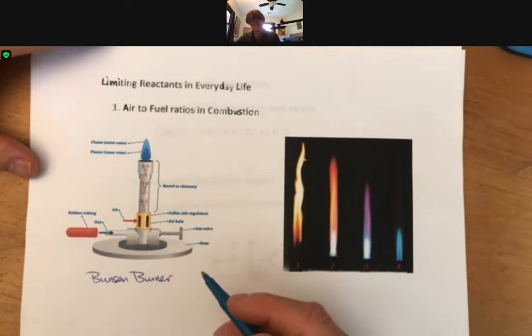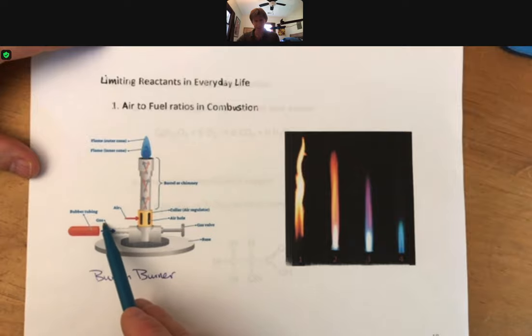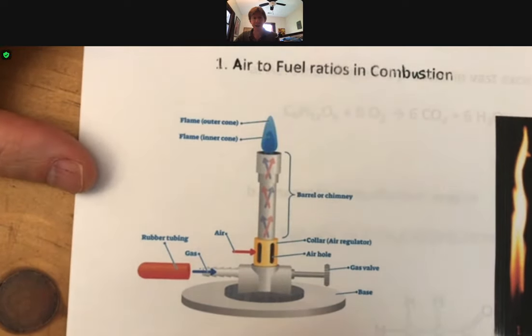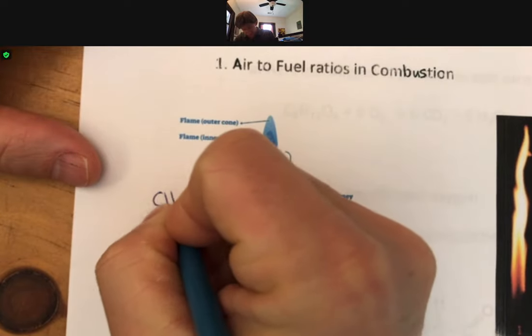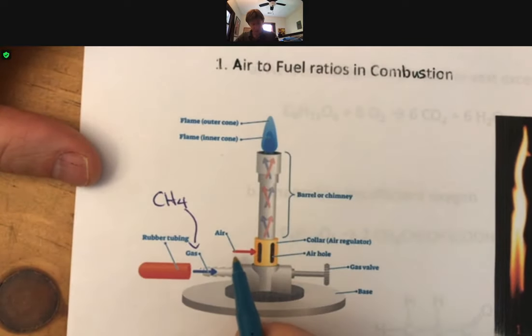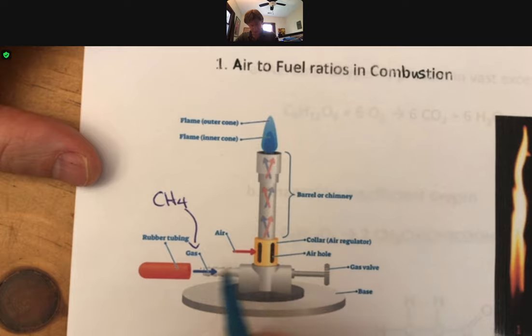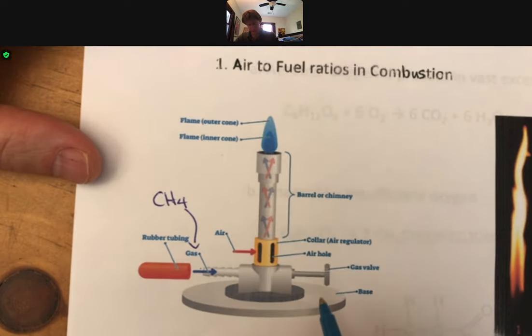This Bunsen burner has a flame, but before there's a flame you can see gas coming in here. That gas, let's zoom in a little bit, is usually methane CH4. It's also got air coming in here, and you can see the air is represented as the red arrow.